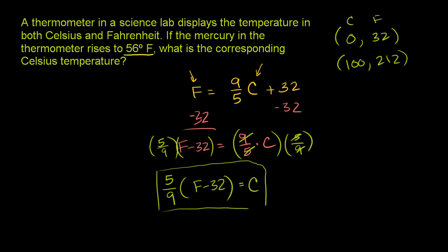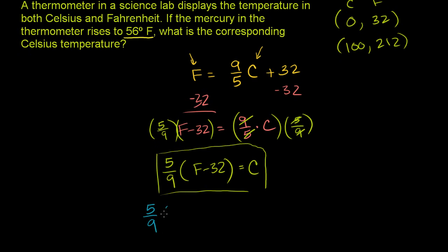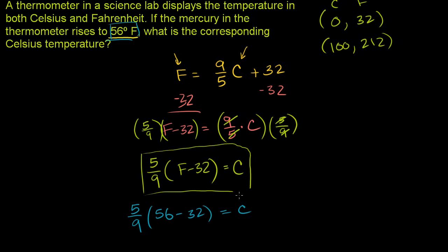So if we put 56 in there, we're going to have 5 ninths times 56 minus 32 is equal to the Celsius temperature. So 56 minus 32. Let me continue it up here. 56 minus 30 is 26, minus 2 is 24. So this is going to be 24.